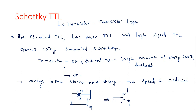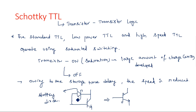The Schottky diode is connected from base to collector to remove the excess charge carriers which are developed when the transistor is in on state. The symbolic representation of the diode and transistor together forms the Schottky transistor symbol. We are going to use such transistors in our design in place of normal transistors, making it a Schottky TTL. The operation of Schottky TTL and normal TTL is the same — the difference is speed of operation.